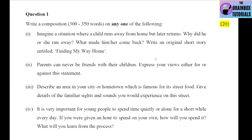Now let us discuss the paper. Question number 1 is composition writing: write a composition of 300 to 350 words on any one of the following. Number 1 — imagine a situation where a child runs away from home but later returns. Why did he or she run away? What made him or her come back? Write an original short story entitled 'Finding My Way Home.' You will have to create the story from your imagination — you cannot copy any story from anywhere or from your textbook.